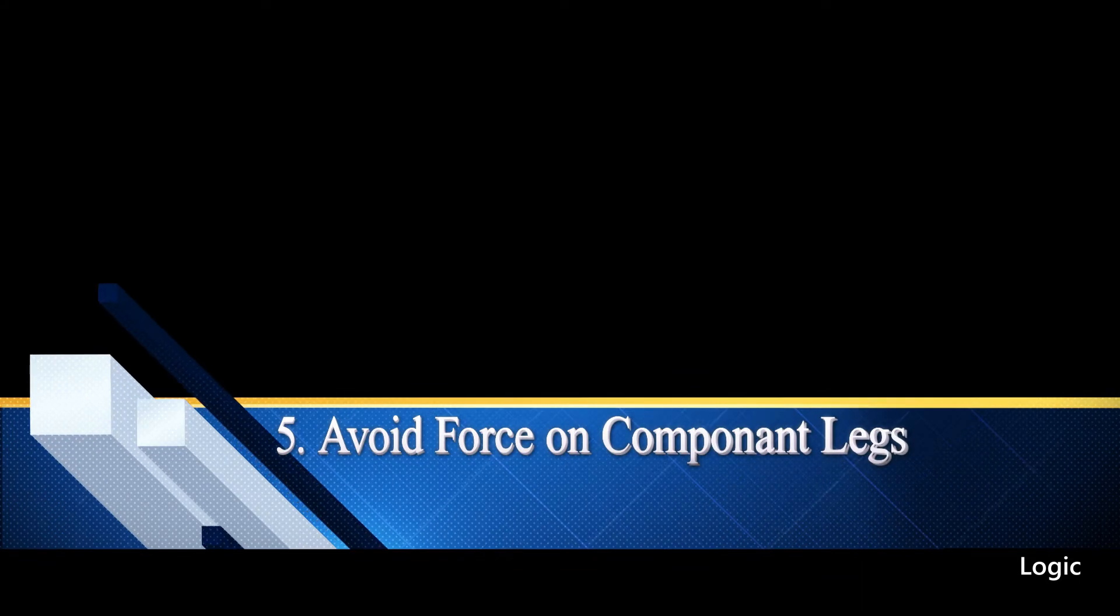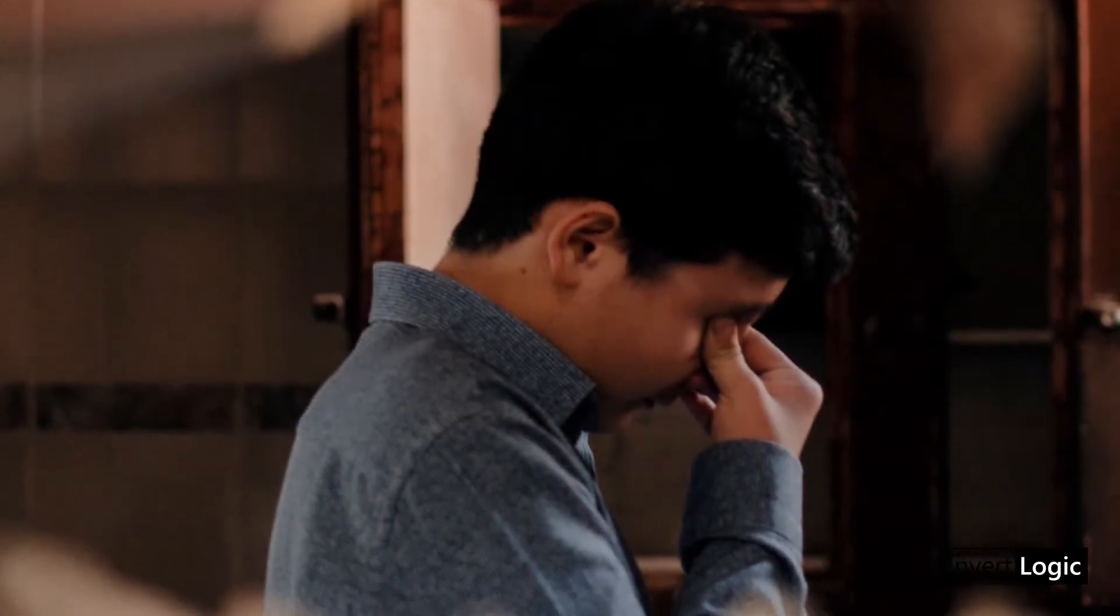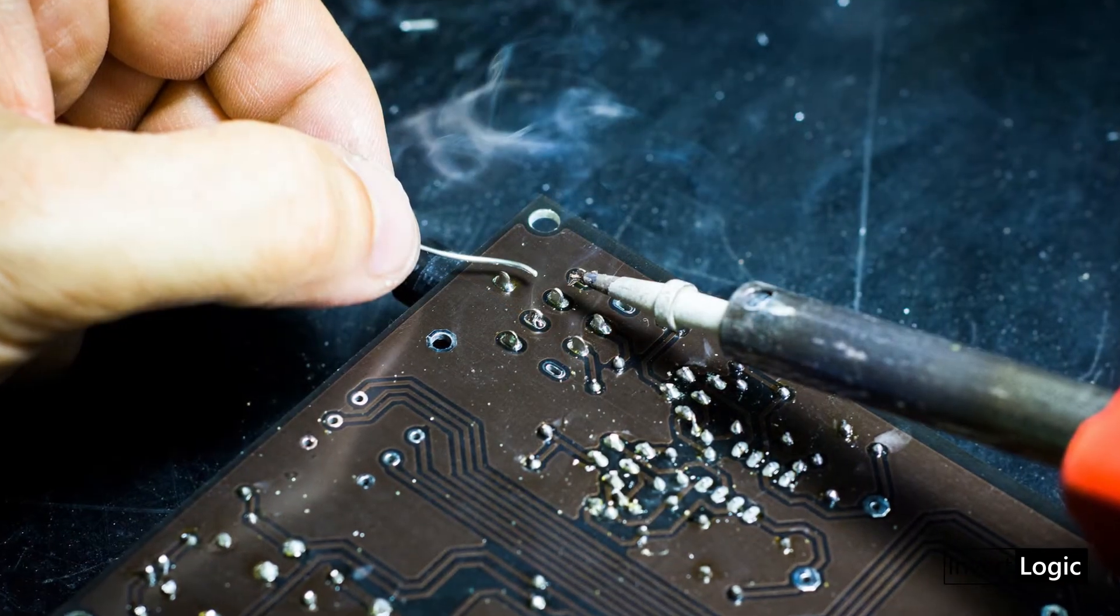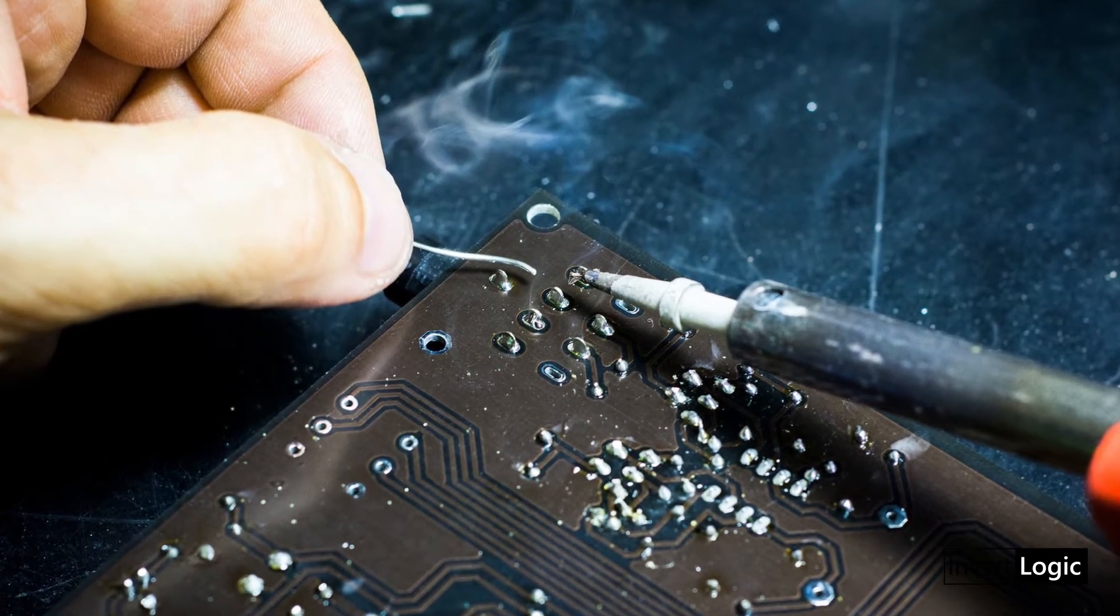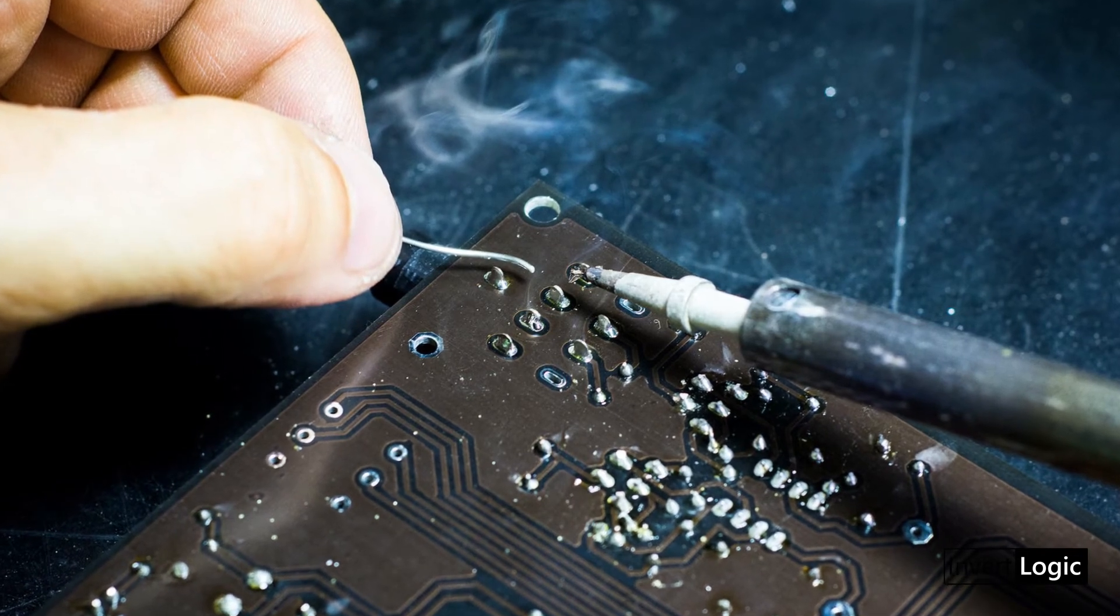5. Avoid force on component legs. When you make a mistake in soldering and would like to remove a component because you used the wrong one for any other reason, you have to carefully and properly remove it from the PCB.